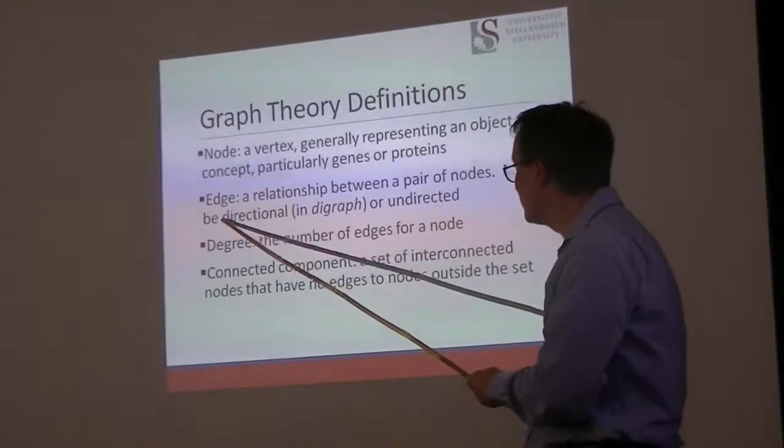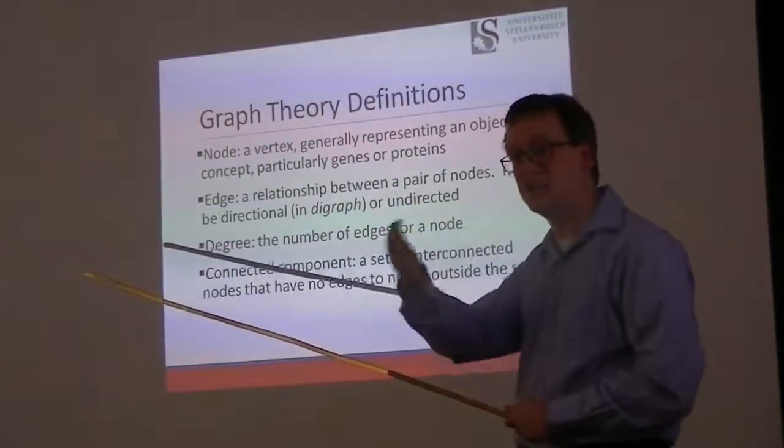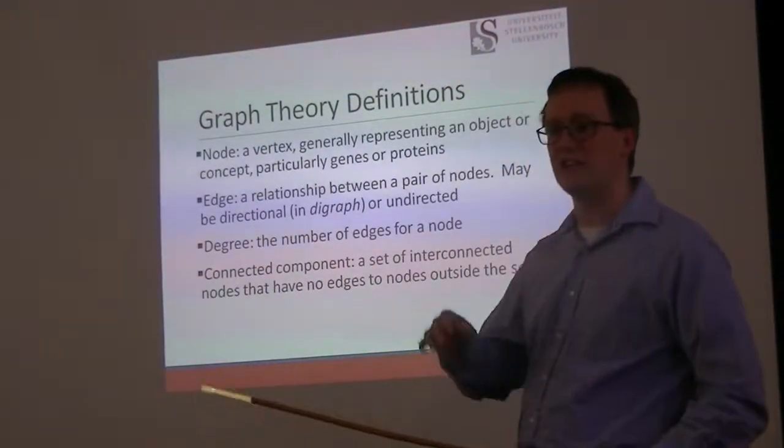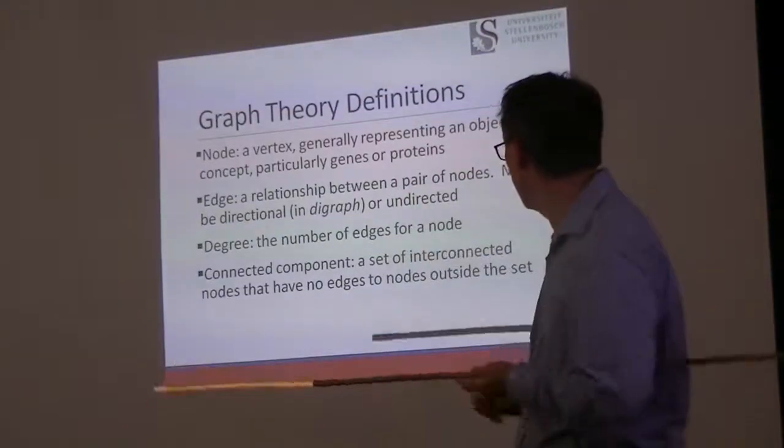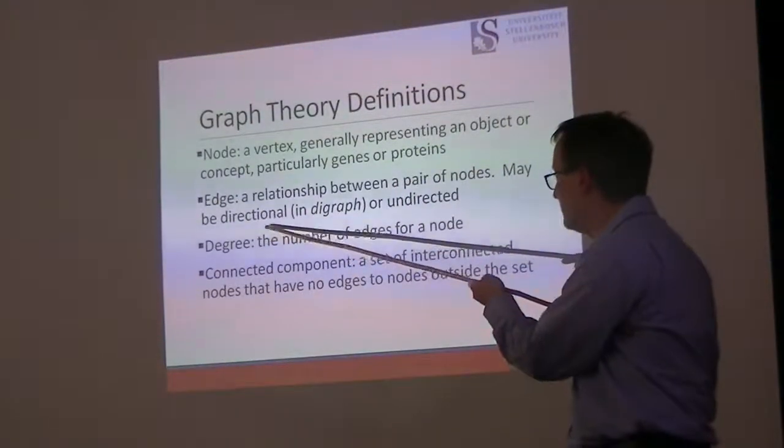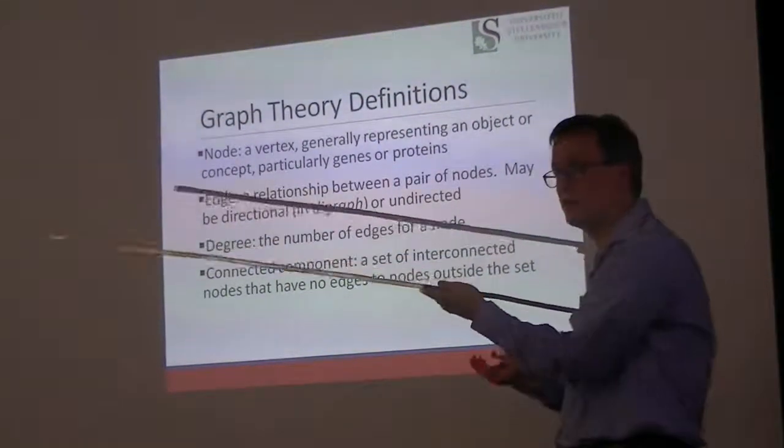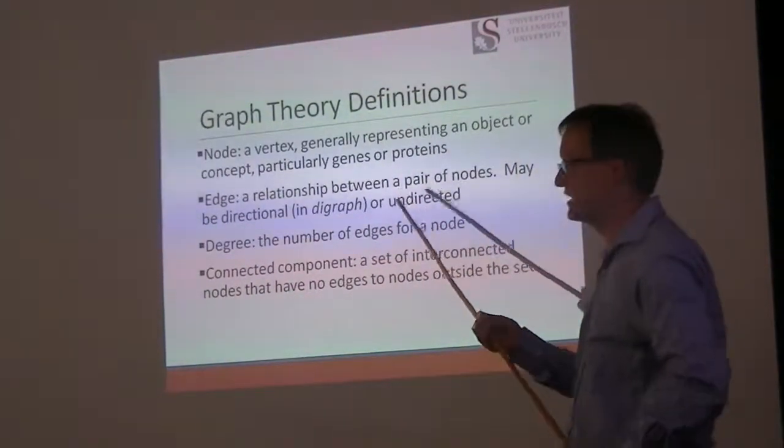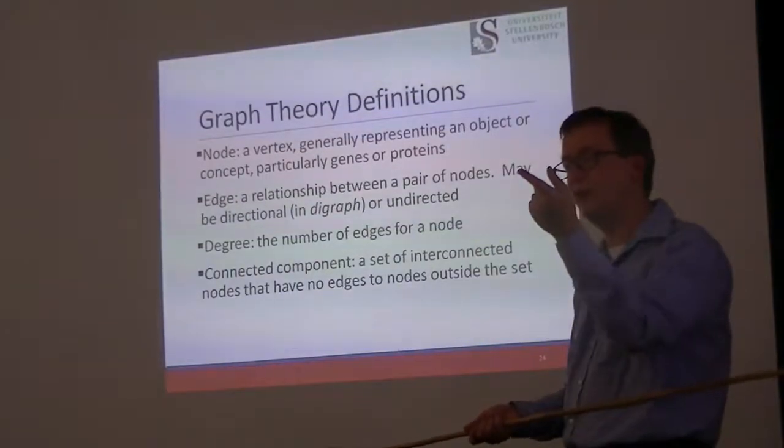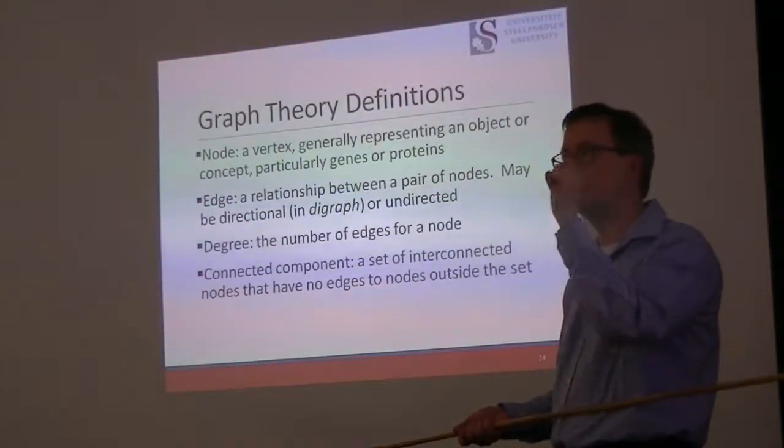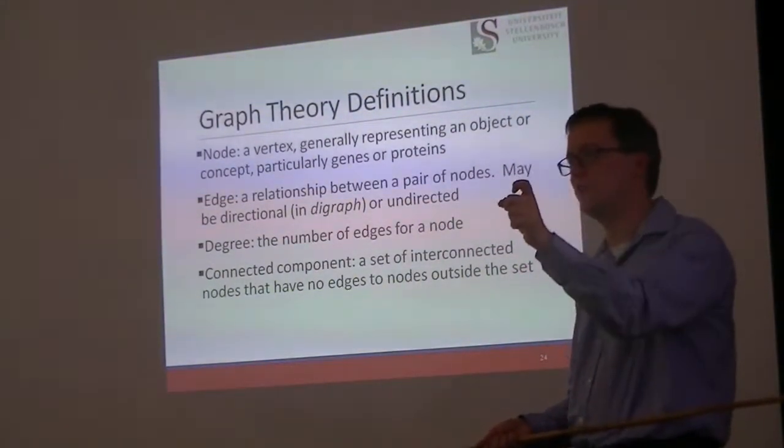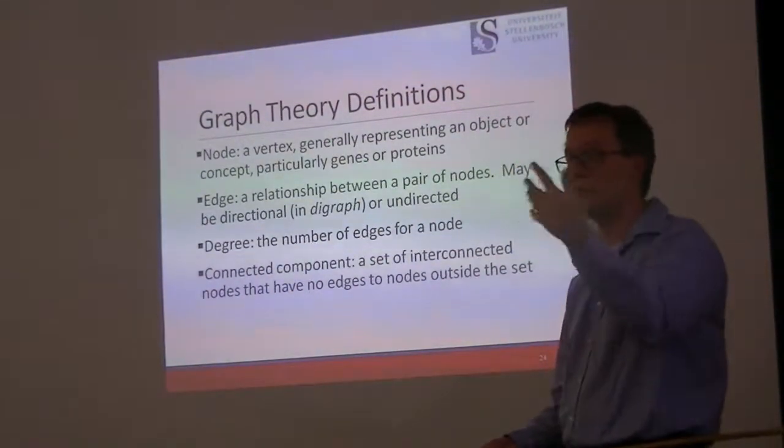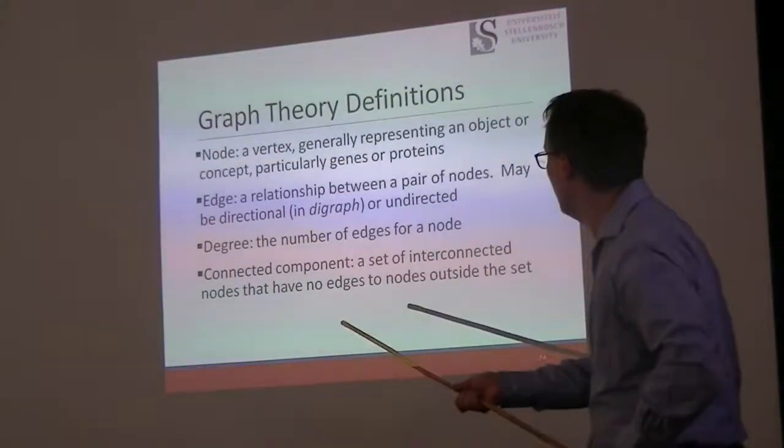An edge generally represents a relationship among these genes or proteins. This edge is always going to connect just two of the nodes. Generally speaking, it will be directional if you have a directional graph, such as one for transcription factors. Or it will be undirected, it won't be directional if you have an association between proteins, that isn't causal, but rather just reflects the fact that when we pull down one, we get the other.